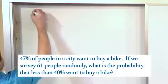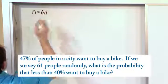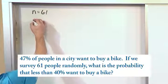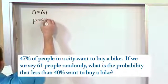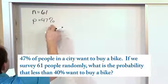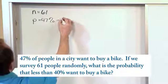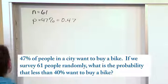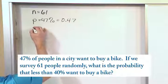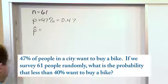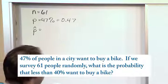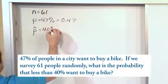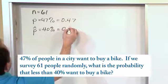The first thing we want to notice is that the sample size given in the problem is 61, because it says we survey 61 people. The population proportion is also given to us as 47%, but we never write it as a percentage in our calculations — so get in the habit of putting 0.47, moving the decimal point two times. We're also told that the sample proportion we're interested in is less than 40%, so we write that as 0.40.